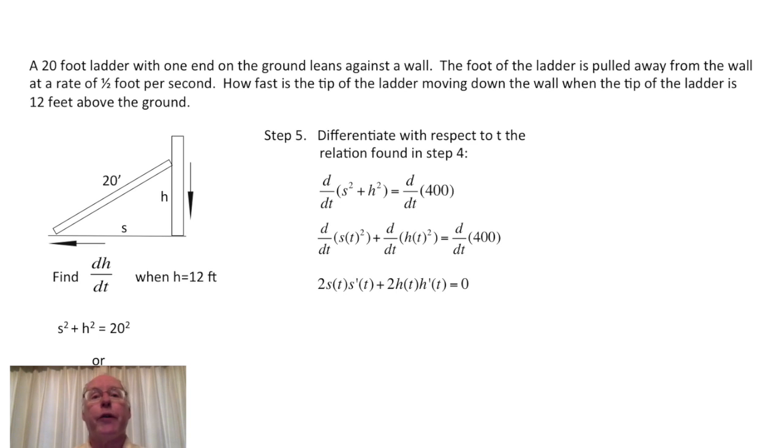Here we differentiate s squared using the chain rule. Differentiate the square first, that gives us two s of t. And then, by the chain rule, we differentiate the thing being squared, and that leads to the s prime. The h of t squared is handled the same way. And of course, the derivative of the constant 400 is zero. We could also write ds/dt instead of s prime if you want, and that leads to another equivalent form of this differentiated relation.